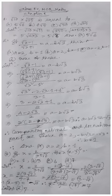The 2s cancel, giving x = 3 − √7. Bringing 3 to the left side: x − 3 = −√7.